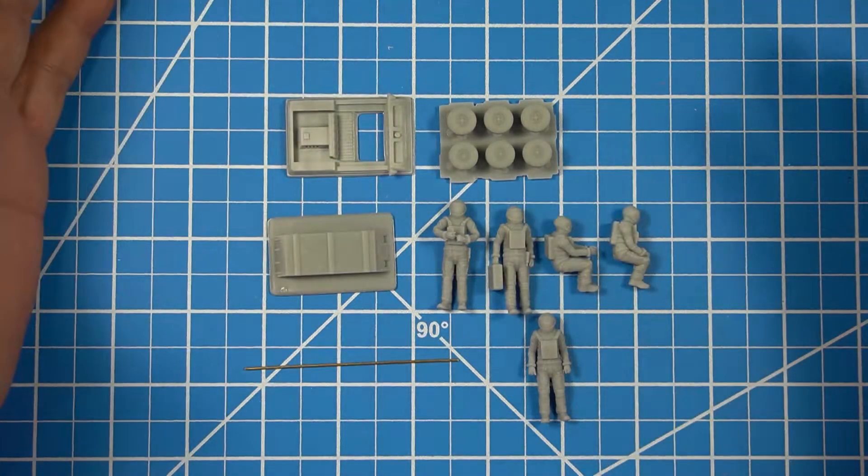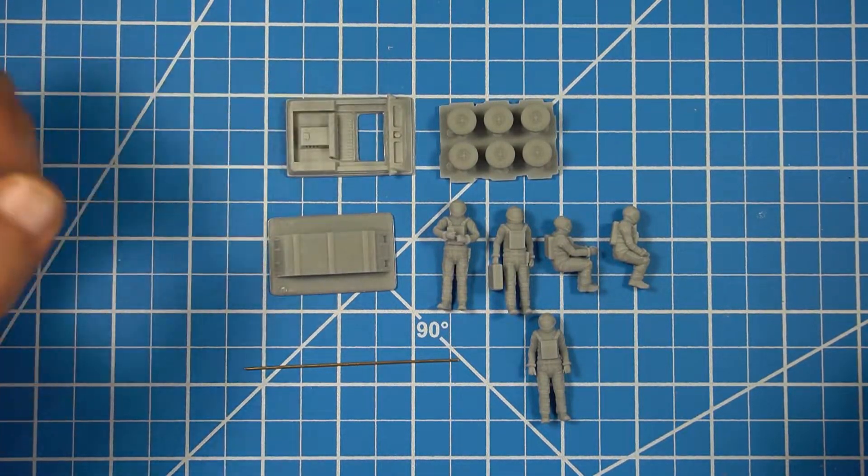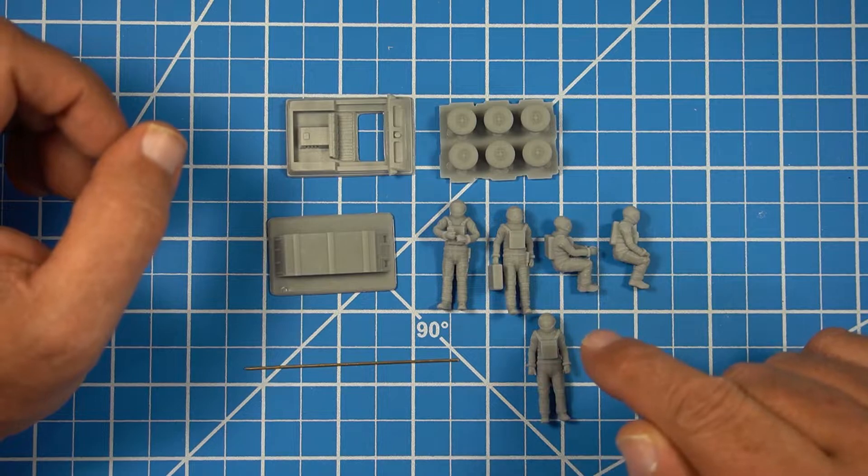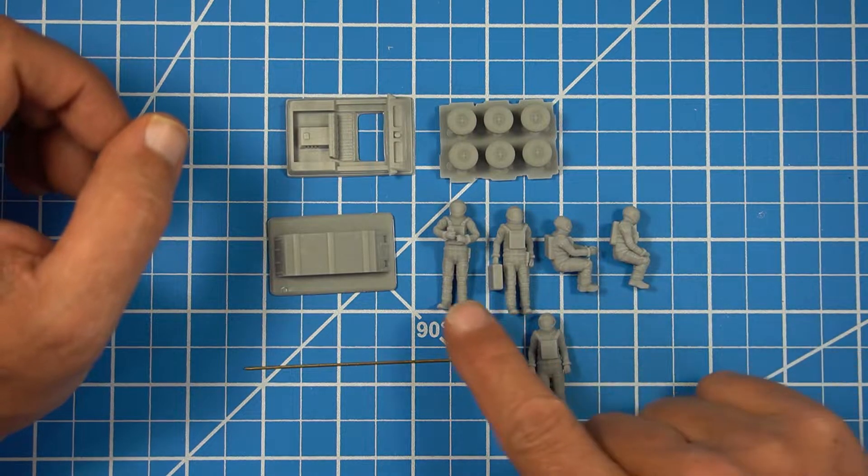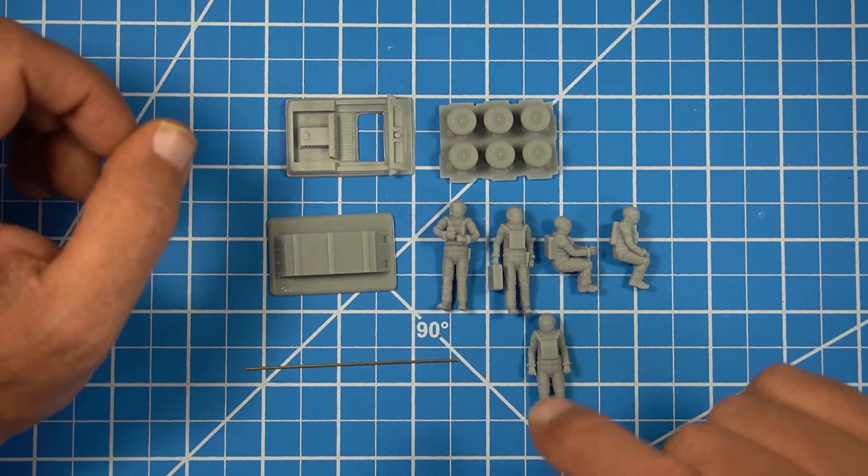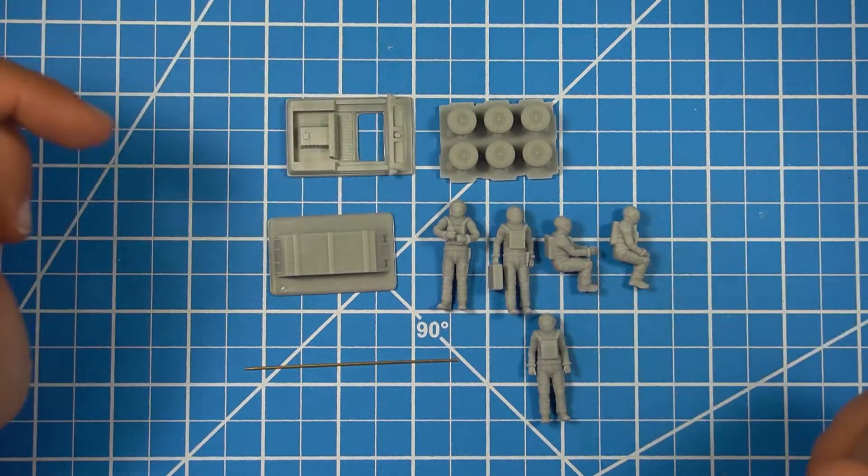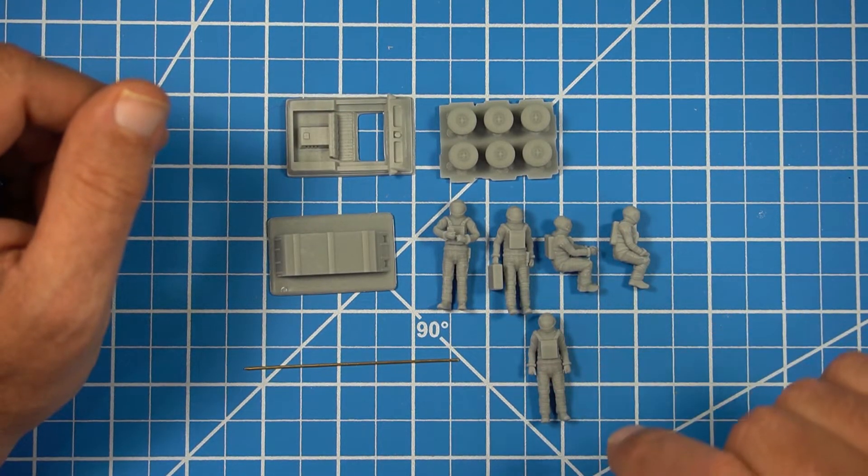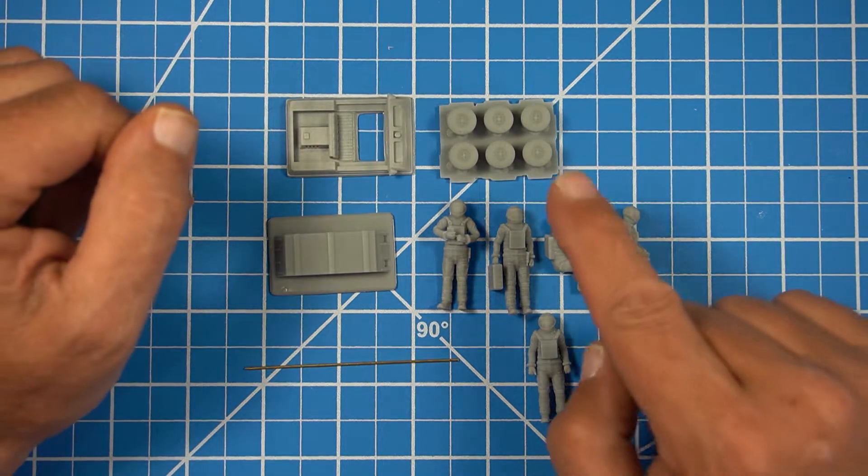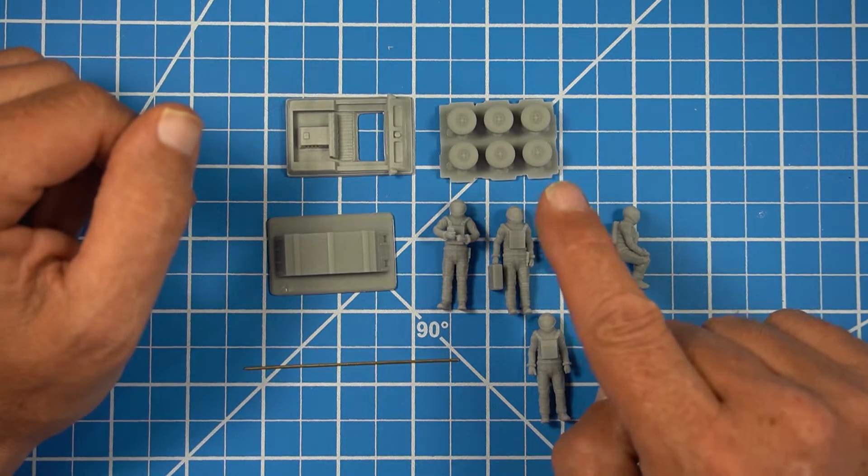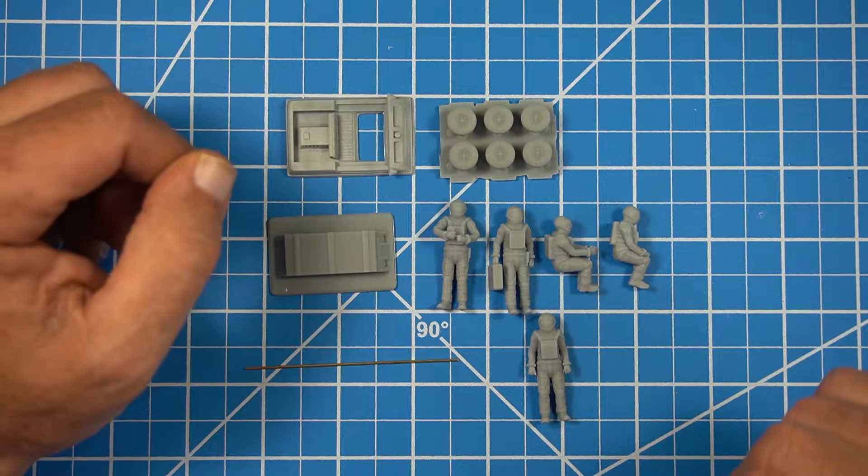This is what comes in the box. This is the 1/48 scale set. You have the two halves of the buggy. You have five people in different positions. One guy doing a slow walk, one guy has like a little communicator or a device to scan things and he's just standing there. A slow walking guy and two people to ride in the buggy. And you also have six wheels which are left on their supports. So let's take a look at each piece.